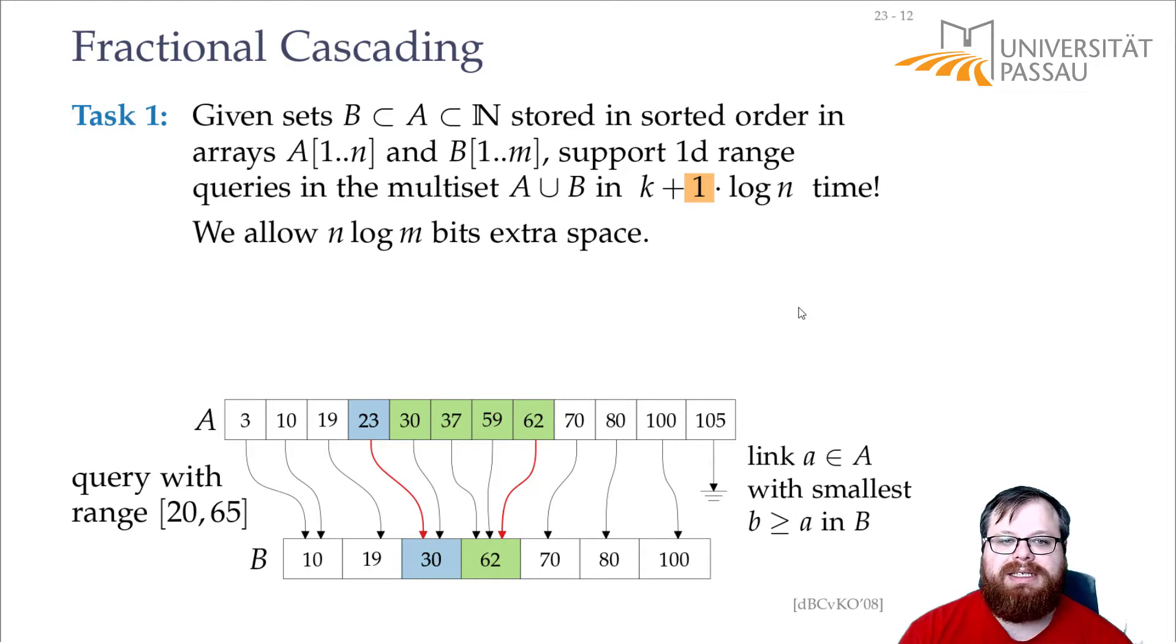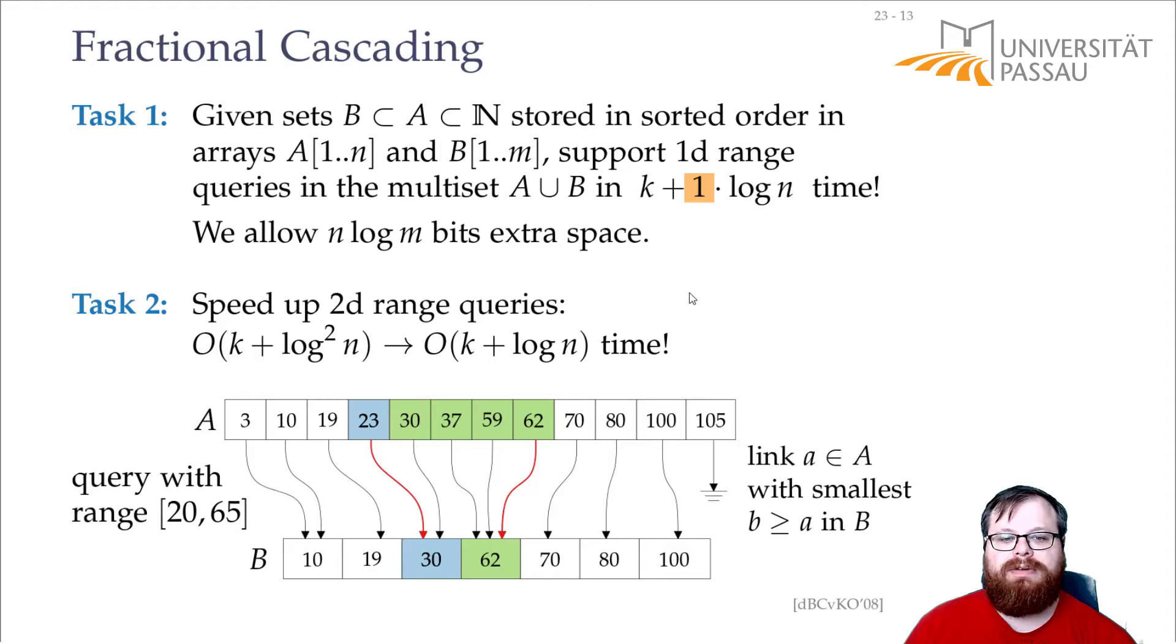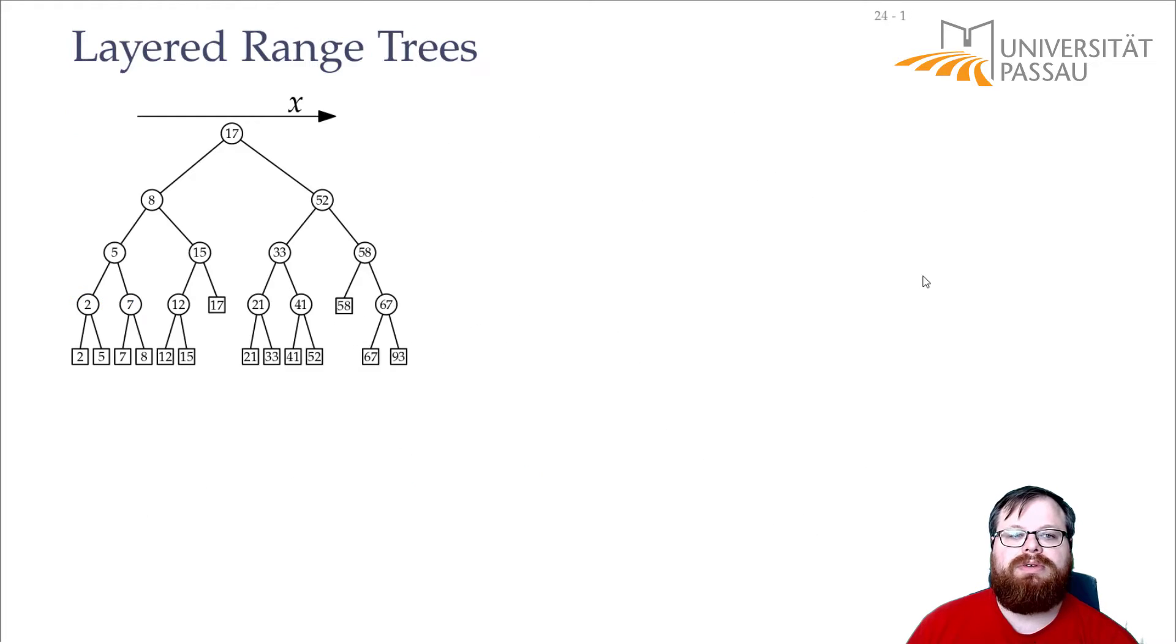Now, how does this help us? This improved the running time kind of for 1d range queries, but it only made the order of go away. So, asymptotically, it's still the same. But we can use this for our 2d range queries to get rid of one log factor. How do we do that? This is the so-called layered range tree.